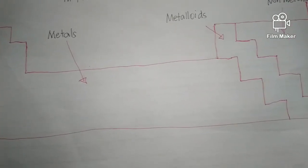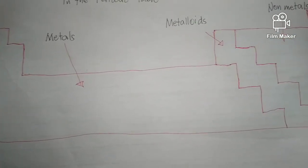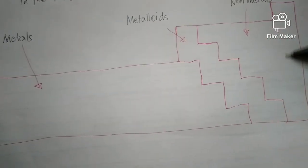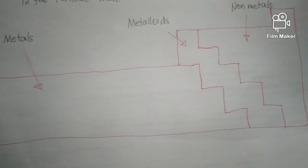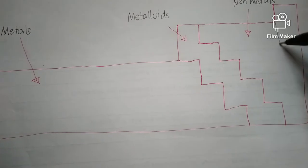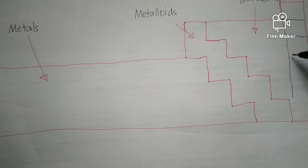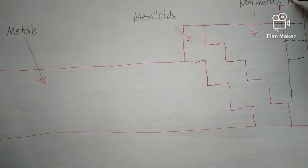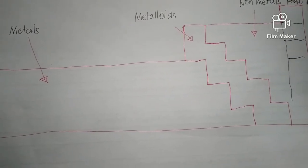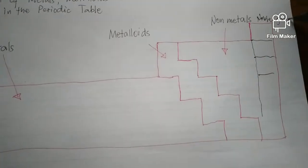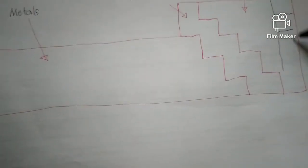Then after the line that forms like a ladder, these are all non-metals. In fact, this line here is where you can find the noble gases. So these are gases.